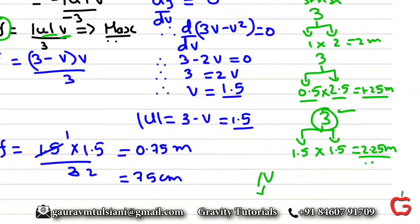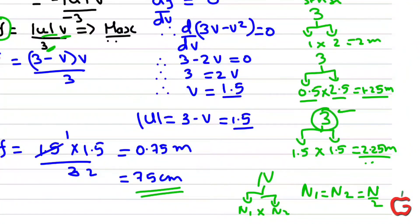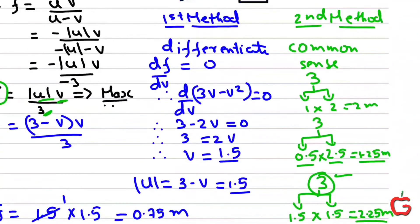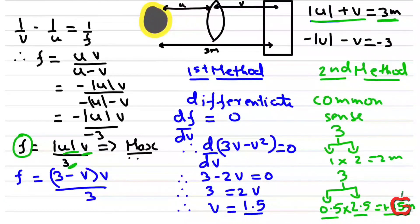In general, if we have a number n to be broken into two parts n1 and n2, the product n1 times n2 is maximum only when they are equal halves of n. So UV is maximum when both U and V are half of three, that is 1.5, giving the same value of 75 centimeters. This common mathematical sense can be used not only here but in specific problems where we need maximum products. For MCQs, entrance exams, or to check your answers, you can use the common sense method.